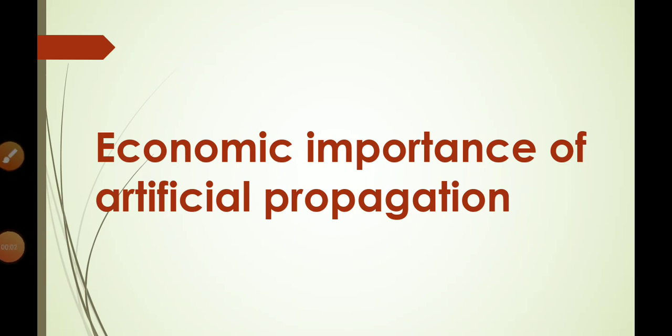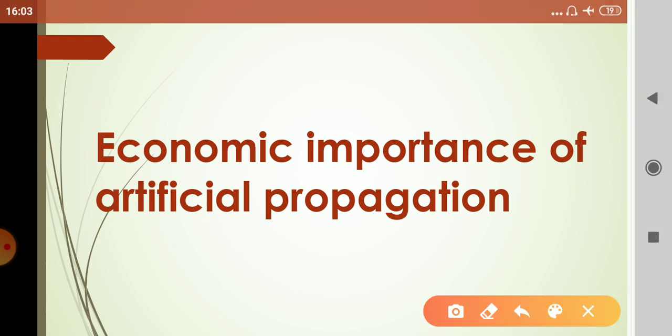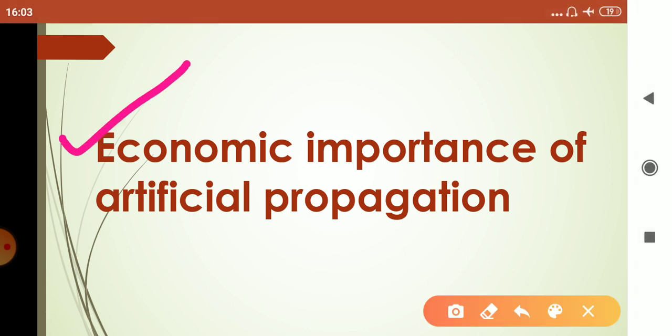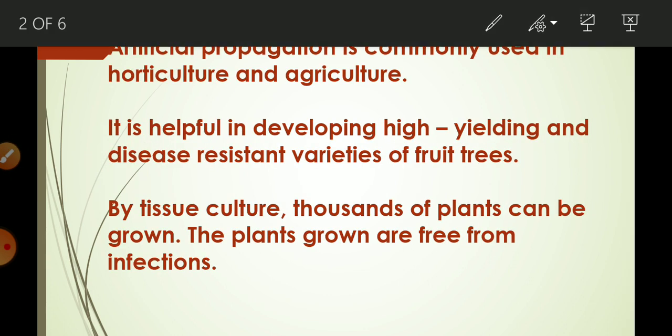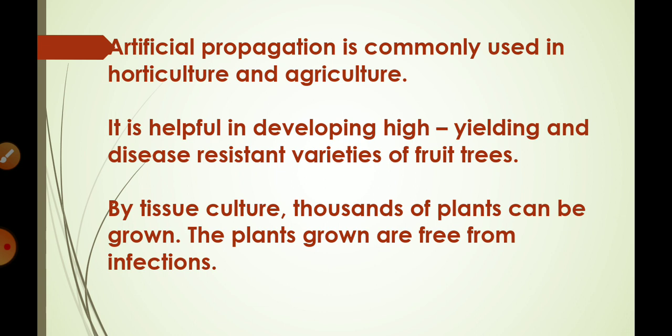Good morning children. Today in this video we will discuss the economic importance of artificial propagation. Along with this we will study the advantages and disadvantages of vegetative propagation. Artificial propagation is a method in which we increase the number of plants by processes like grafting, layering, and stem cutting.